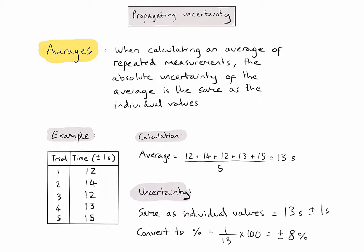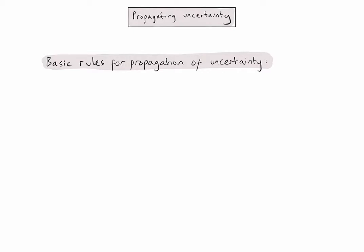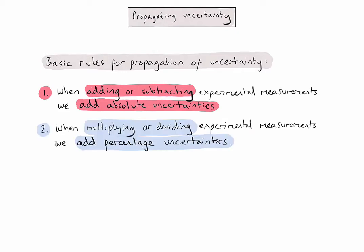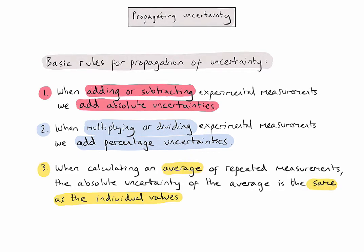Let's quickly summarise the three key rules for propagating uncertainty. Firstly, when adding or subtracting experimental measurements, we need to add together the absolute uncertainties, then convert to a percentage uncertainty if needed. If we are multiplying or dividing experimental measurements, we need to add together the percentage uncertainties. Finally, when calculating an average of repeated measurements, the absolute uncertainty of the average is the same as those of the individual values, and again can be converted to a percentage uncertainty if required.